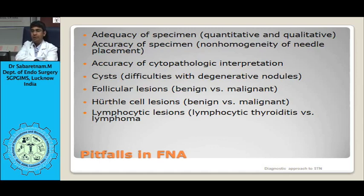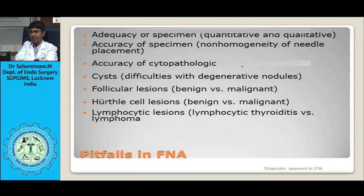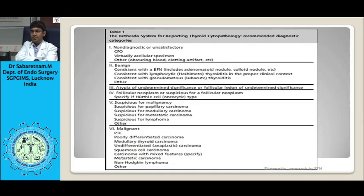FNAC is usually done using a 23 or 24 gauge needle attached to a 10 ml syringe mounted on Franzen's apparatus. The needle is inserted into the nodule after fixing it, usually without suction, using a back-and-forth motion. The aspirate appears in the needle hub; when suction is released, the needle is withdrawn and smears are prepared. Usually 4 to 5 slides are prepared — 2 are air-dried and the rest are fixed with 95% alcohol and then processed.